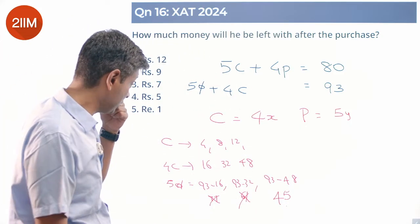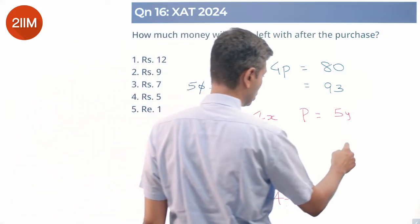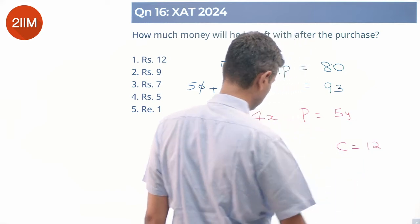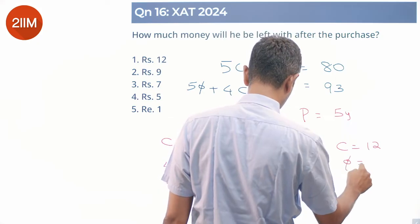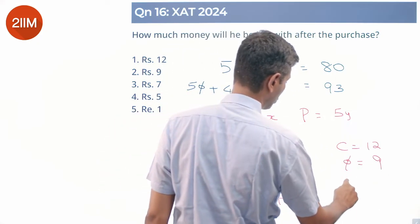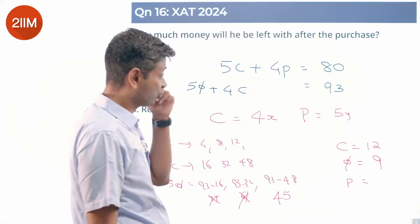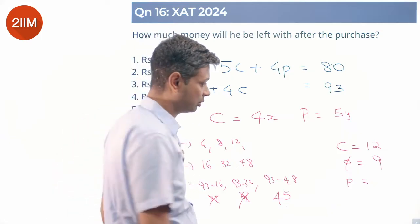So the price per cabbage should be 12. The price of onion should be 9. Price of potato: 5 into 12 is 60, remaining 20, so price for potato is 5.